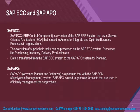ECC is used to automate, integrate, and optimize business processes in organizations. Supply chain tasks such as purchasing, inventory, delivery, and production are processed on SAP ECC. Data is then transferred from the ECC system to the APO system for planning. Together, the SAP ECC system and APO are closely related in the supply chain planning landscape.